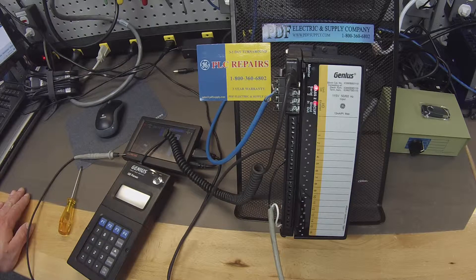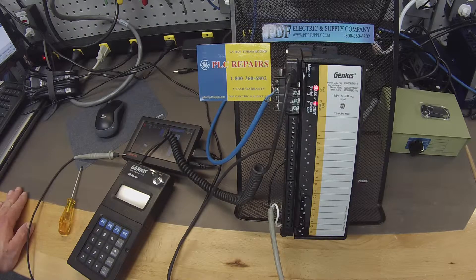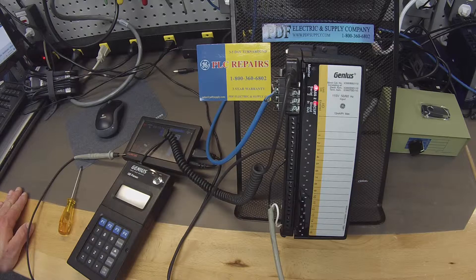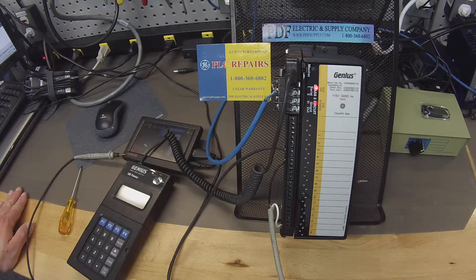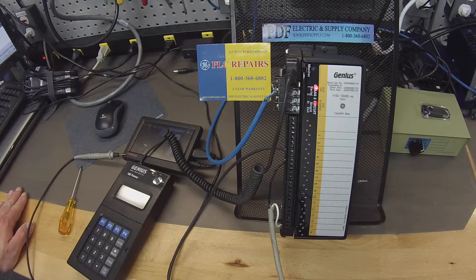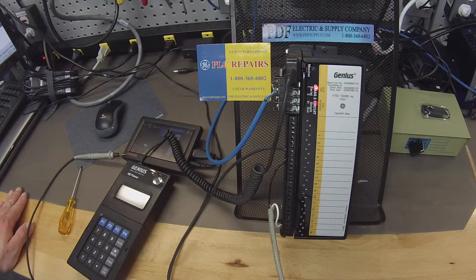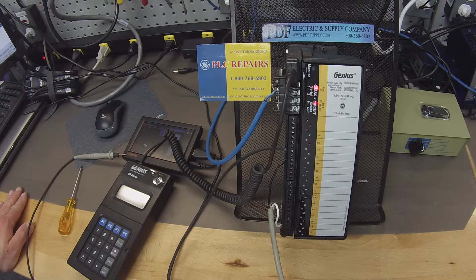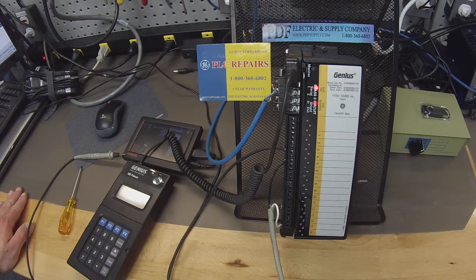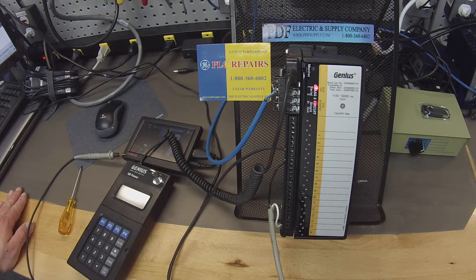If any of those things are a problem, these IC660 BBD 110 is a genius block that we very commonly repair here at PDF Supply. We offer exchange programs, new and re-manufactured products and same-day shipping. If that's something that you need or interests you, please see us at PDFsupply.com. Thank you.